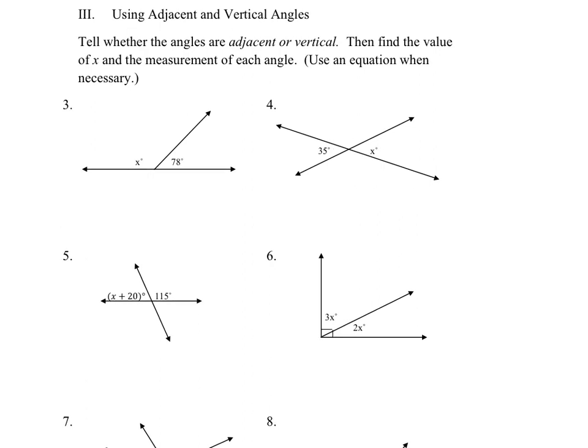If you look at this first one, we have this angle here is angle X and then this angle is 78 degrees. These are adjacent to one another. They're not vertical. So what you can see is that if you put the two angles together, angle X plus 78 degrees, they create a straight line. Every straight line is 180 degrees.